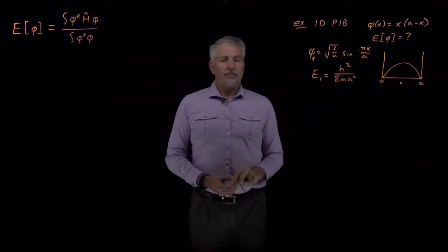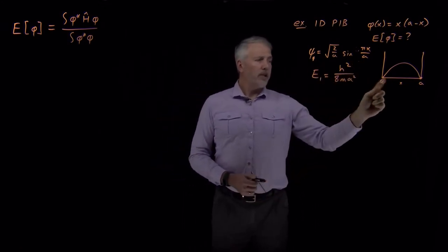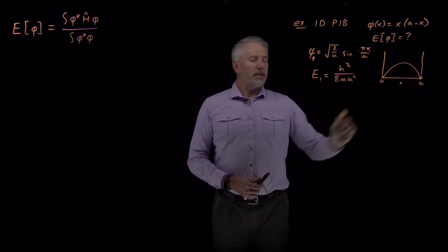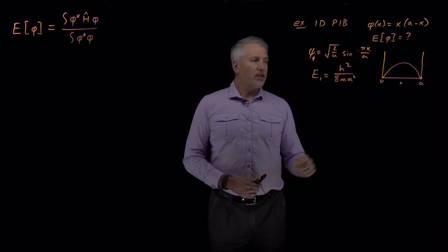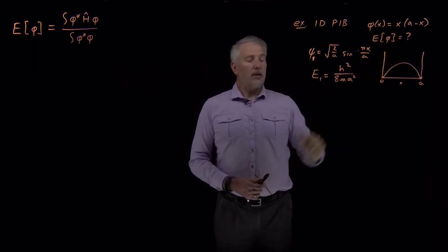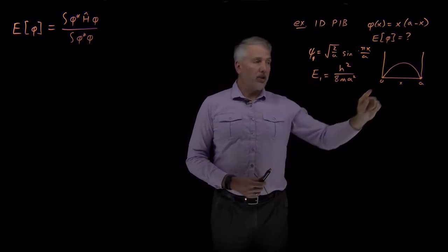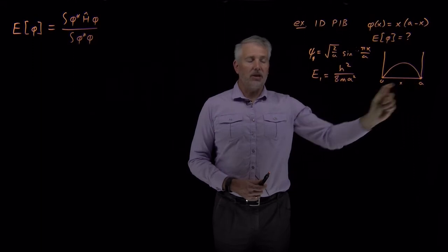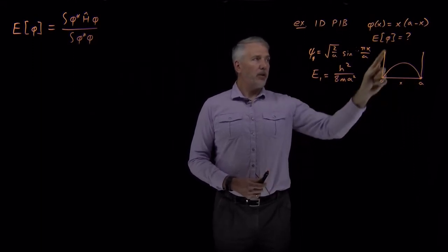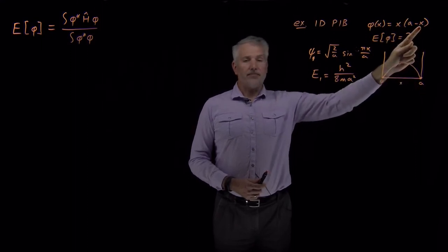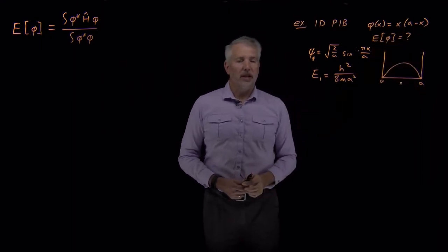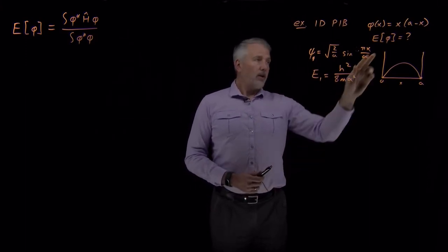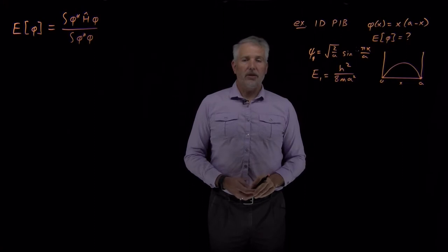Instead of using the correct solution, we know at least qualitatively that the function should start at zero, go up, and then come back down and land at zero at x equals a. Another function that has that qualitatively correct behavior is a parabola — one that starts at zero, rises to a maximum in the middle of the box, and then decreases to zero at the other edge, with zeros at x equals zero and x equals a. This function gives an expression that at least looks somewhat like the right solution.